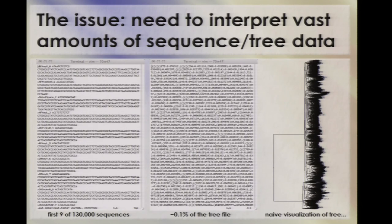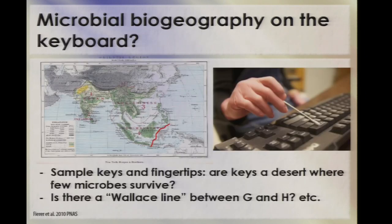To get to these stories, what you have to start with is a whole lot of sequence data and phylogenetic trees. What I'm showing you here is just the first nine out of 130,000 sequences from a study we did recently with Noah Ferrer's group, along with a piece of the phylogenetic tree file and its visualization. You can immediately tell you've got your work cut out for you. It doesn't help much even if I tell you the study design — we were looking at biogeography, but not on the grand scale of Darwin and Wallace.